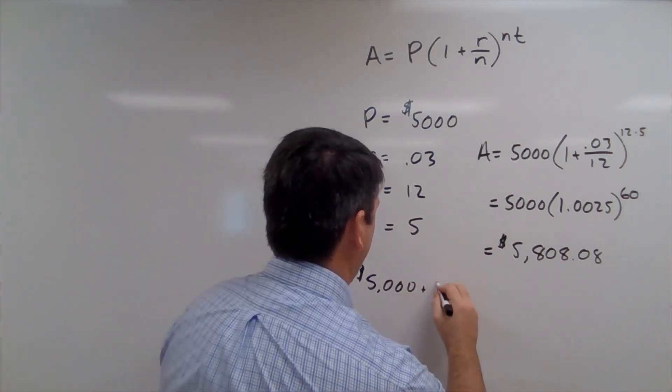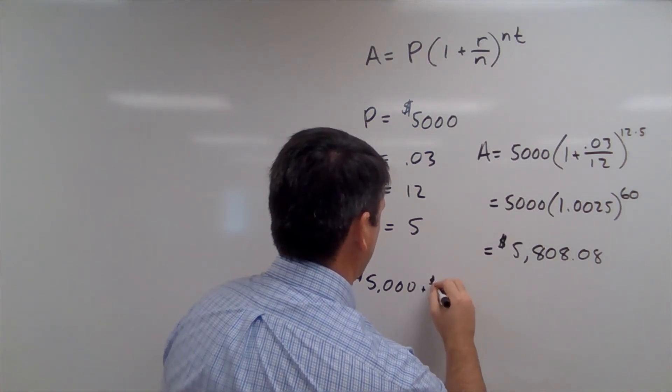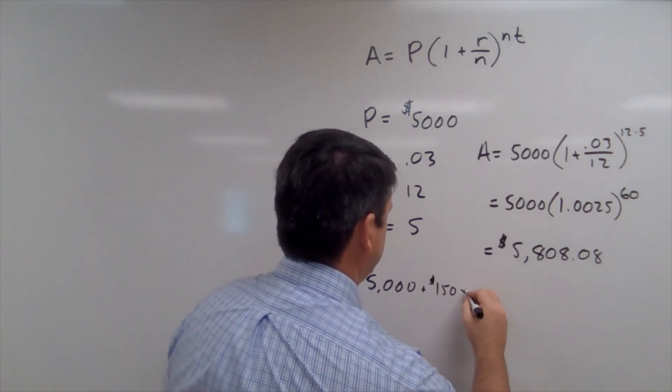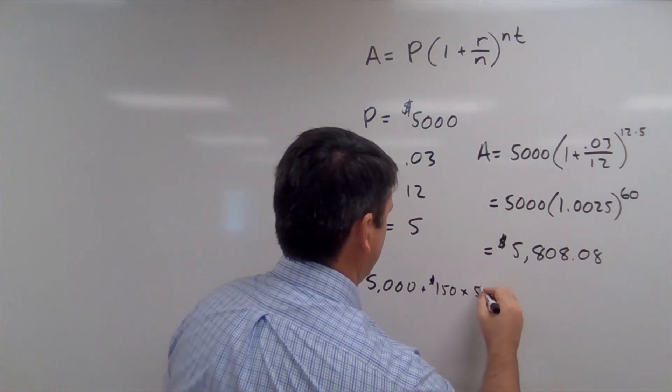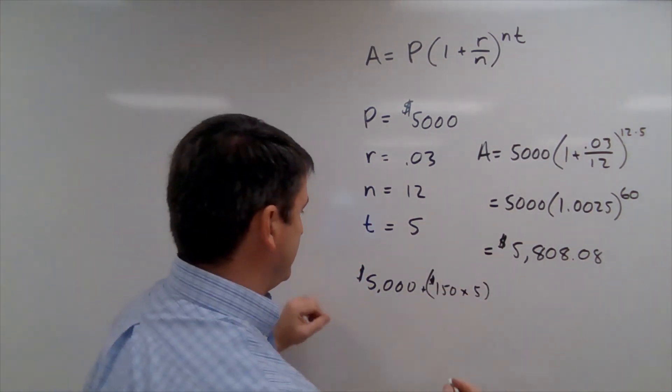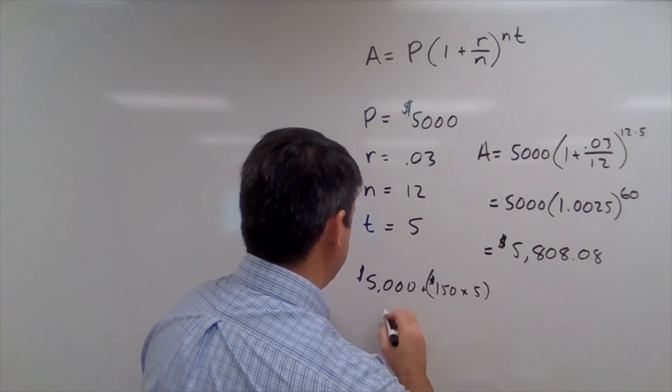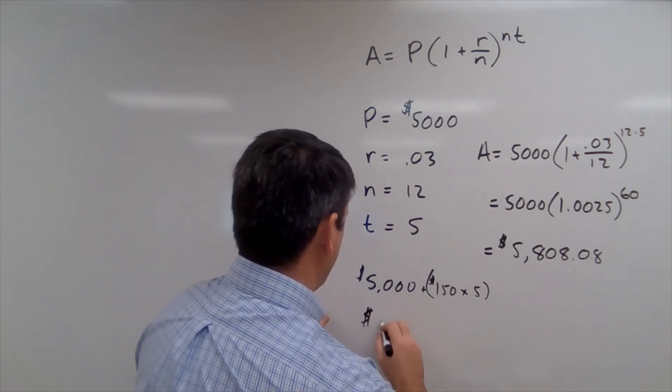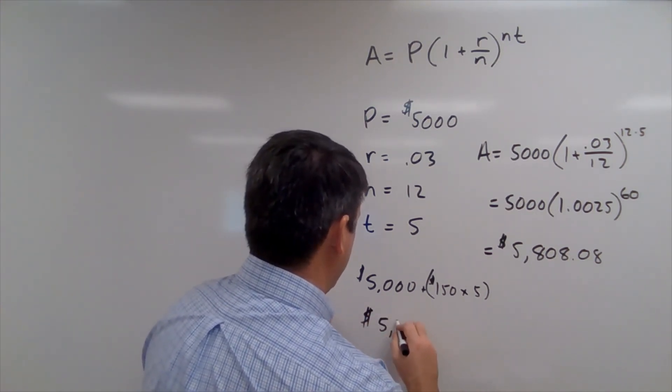And we would just keep earning that $150 every year. So it's going to be $5,000, our original principal, plus that $150 times five years. And $150 times five is $750. So with simple interest, we'd make $5,750.